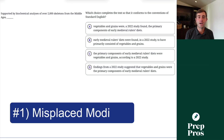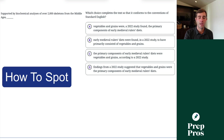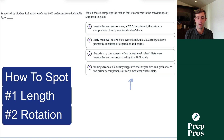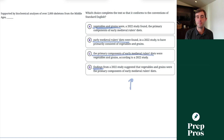The first question type is misplaced modifiers. These are going to be incredibly easy to spot for two reasons. Number one, the answer choices are much longer than any other grammar question on the SAT. And number two, you will see a rotation in the subjects of each answer choice at the front of them. Once you see those two things, you know it's a modifier.